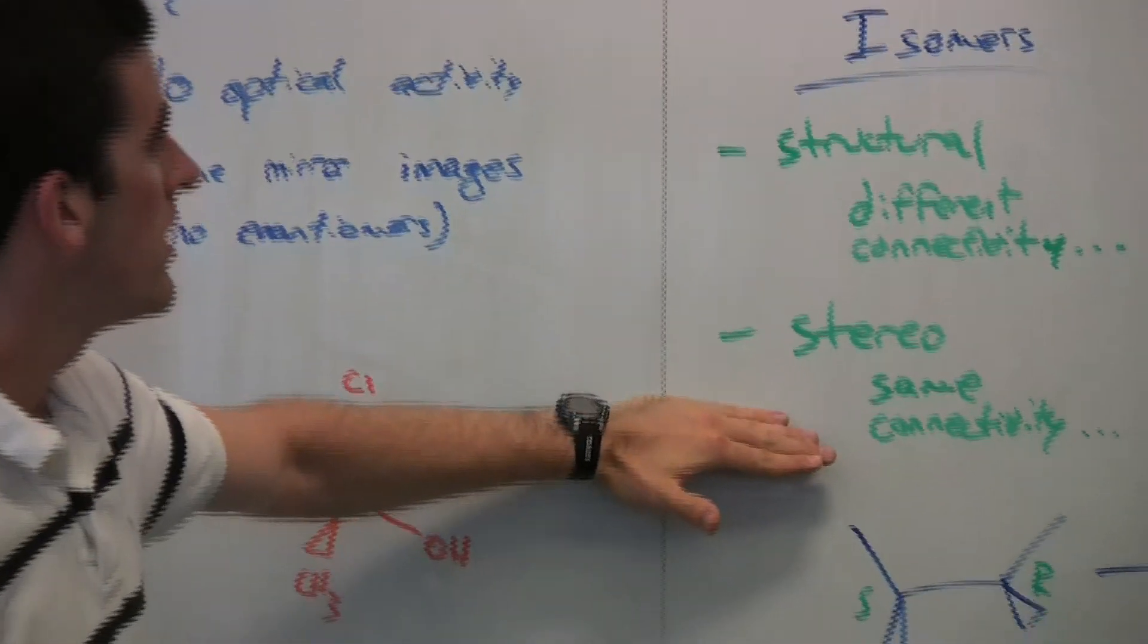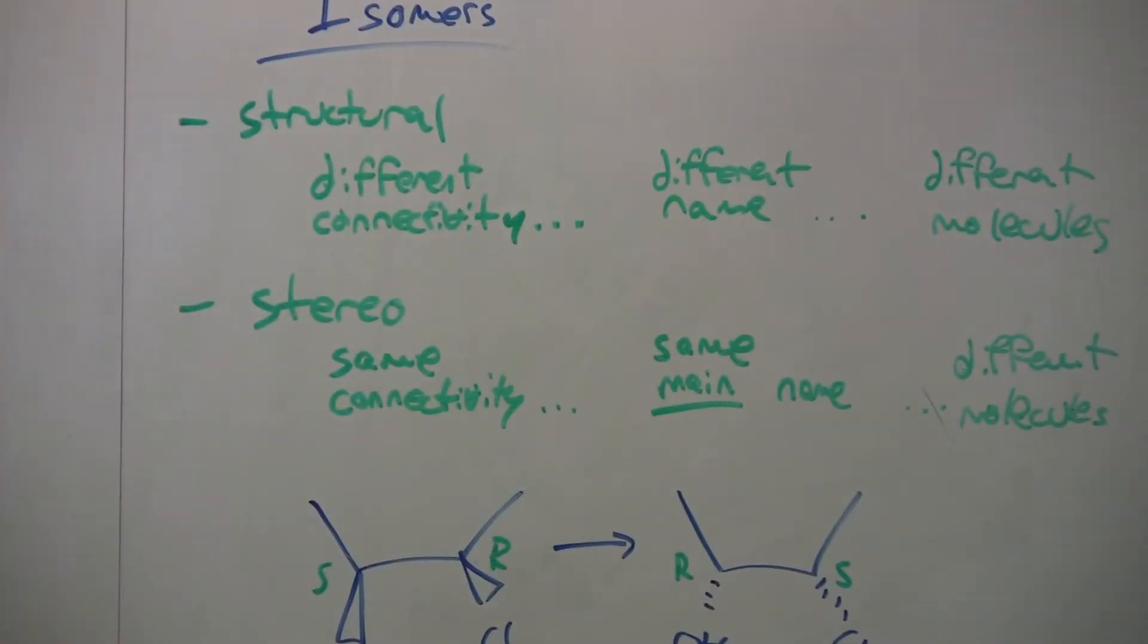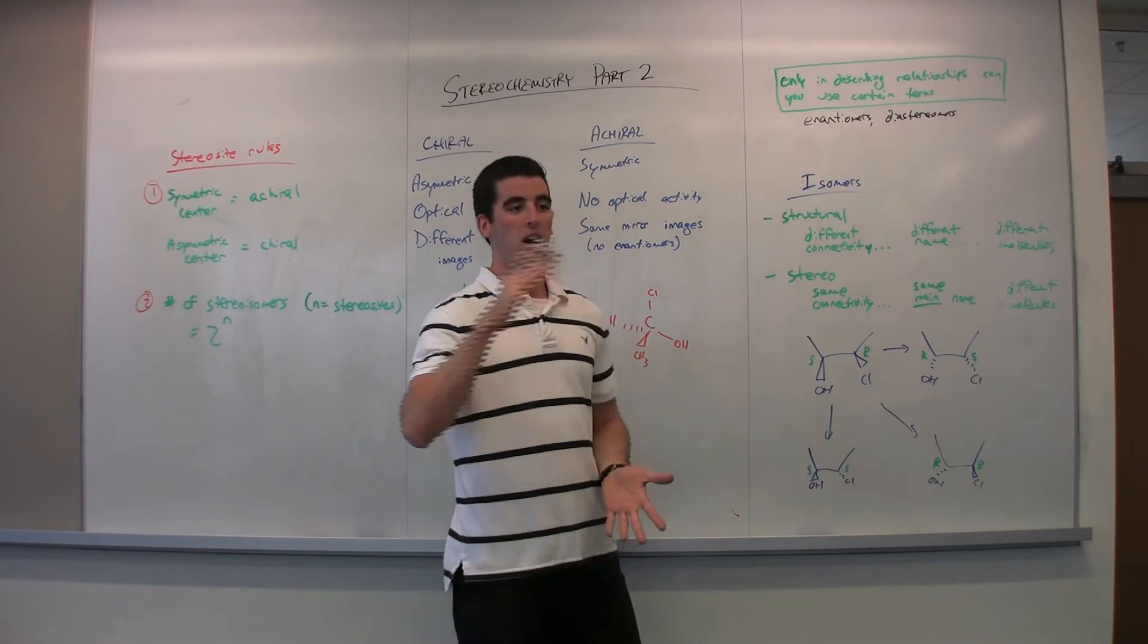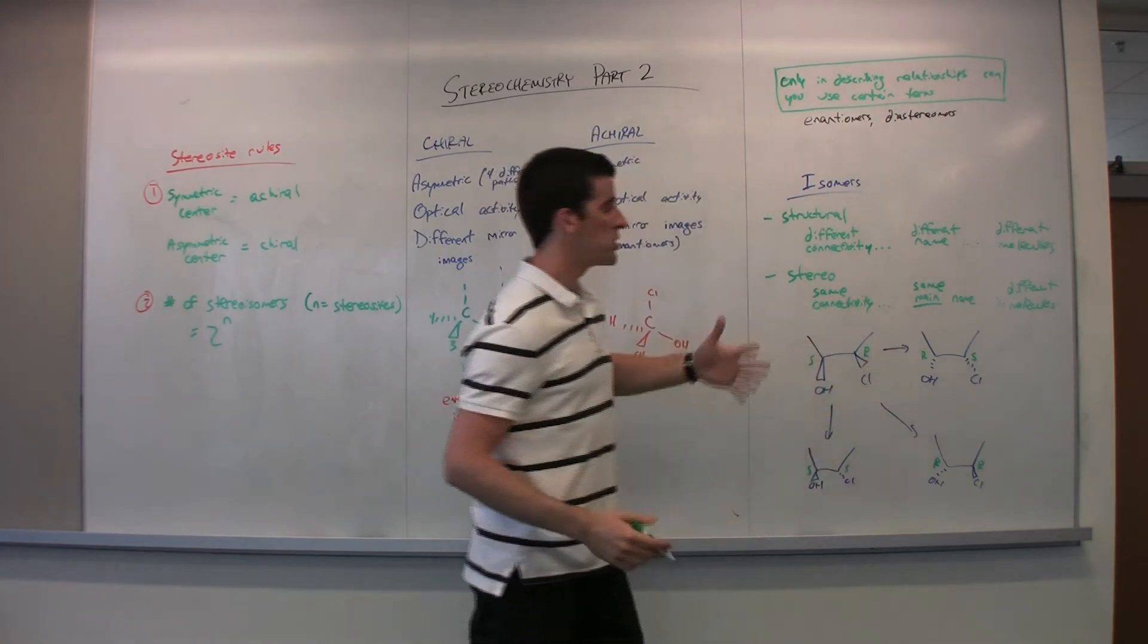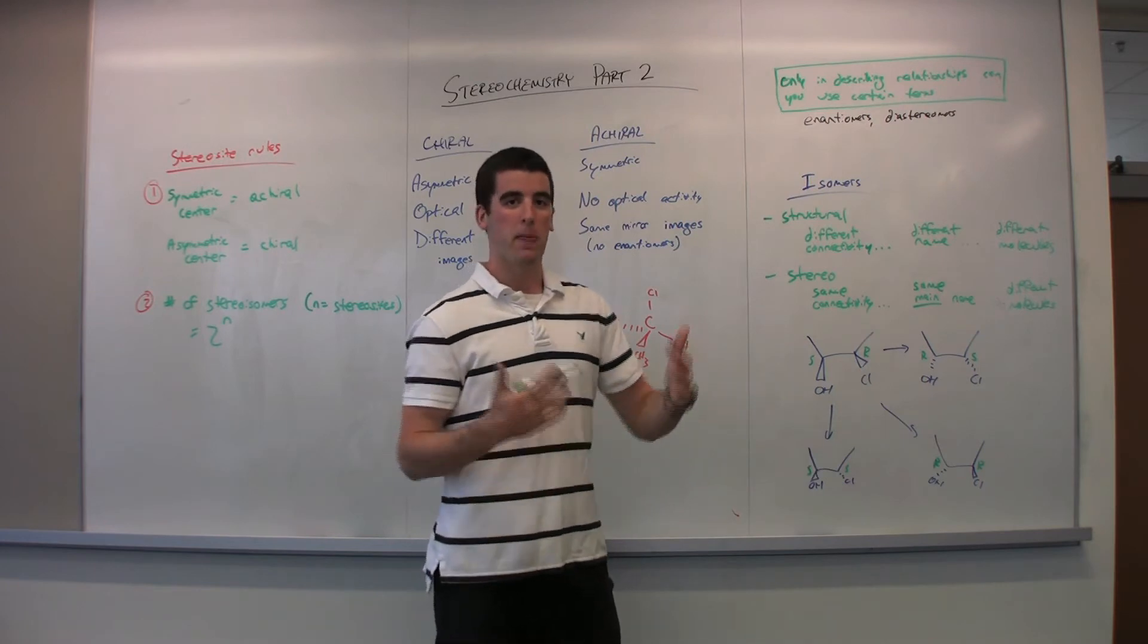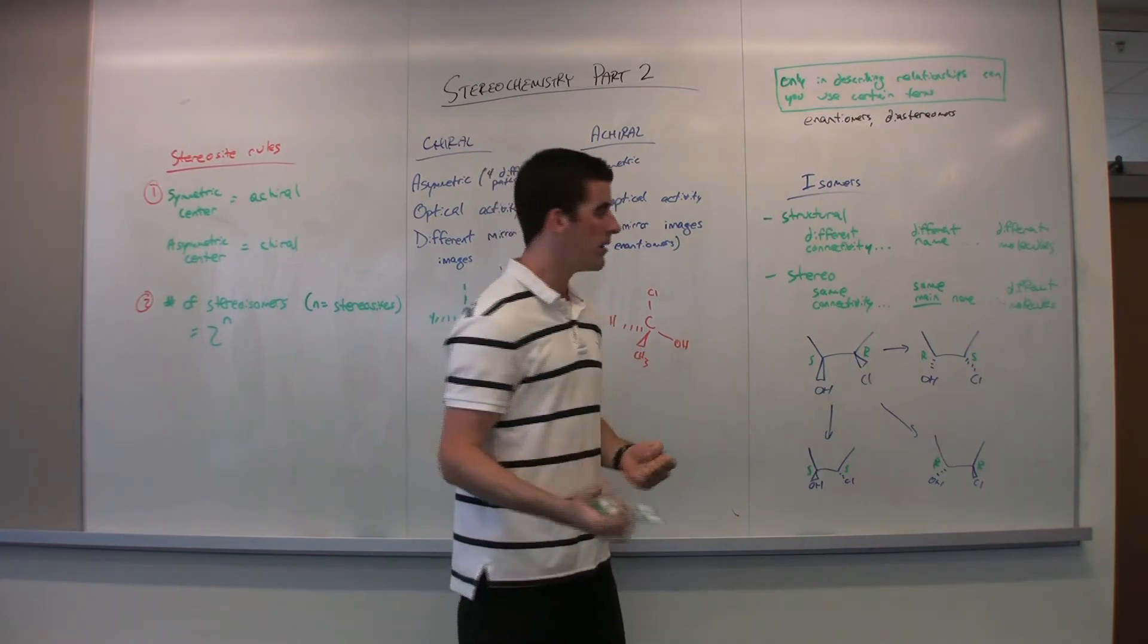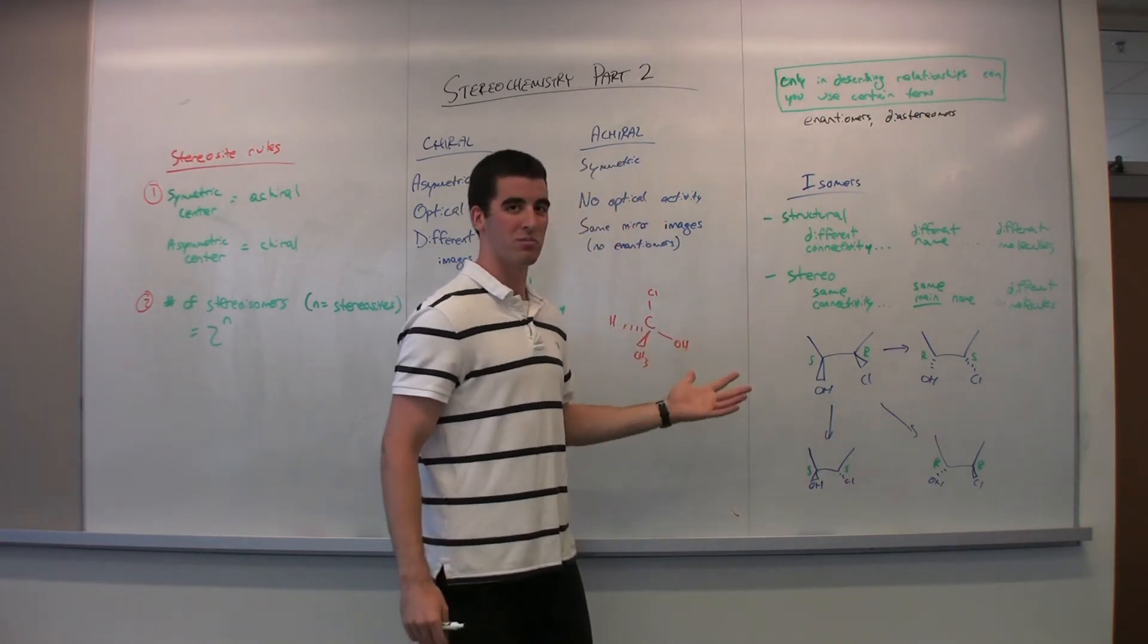With stereoisomers, you have that same connectivity. You have the same main name. The only difference is that change in configurations, change in how they're aligned in space there. So you have different molecules. While you do have that same main IUPAC name, if something is wedge, something is dashed, if you have a stereocenter there, then you're going to have a different configuration of space. You're going to actually have different molecules because they are slightly different.